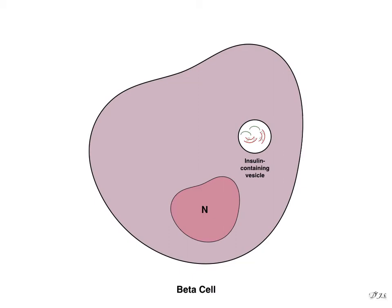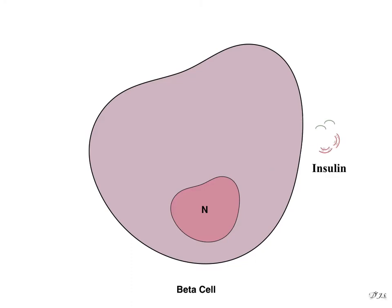The insulin-containing vesicle exocytoses the insulin. When insulin is secreted into the blood, it circulates almost entirely in an unbound form. It has a plasma half-life that averages only about 6 minutes, so it is mainly cleared from the circulation within 10 to 15 minutes.